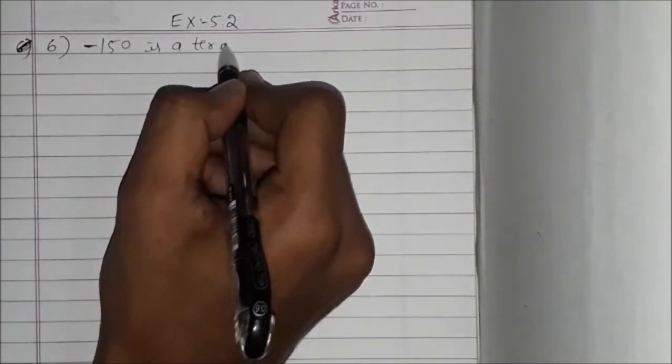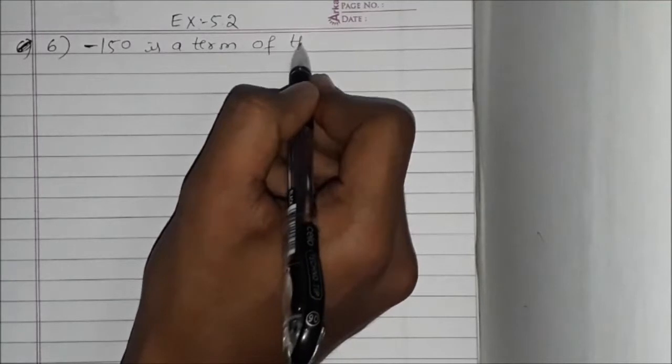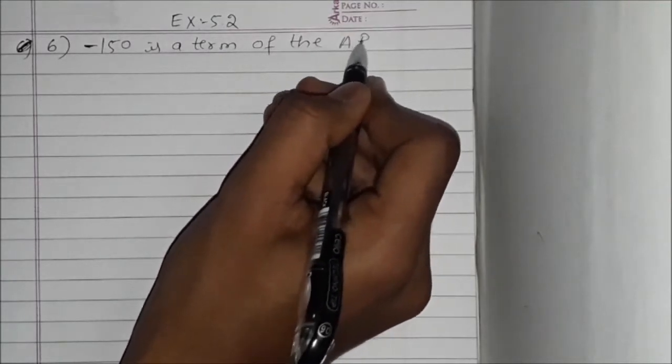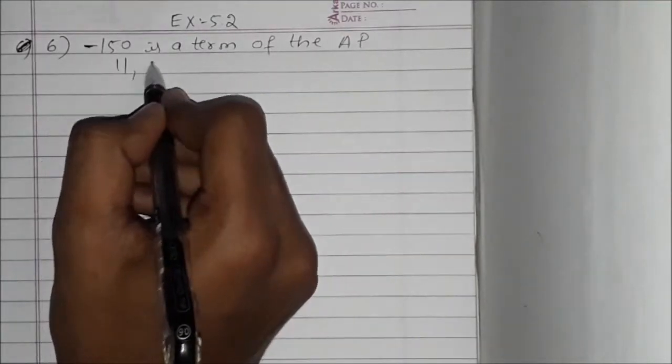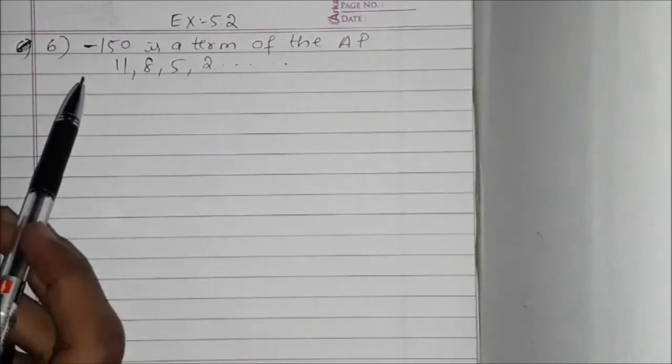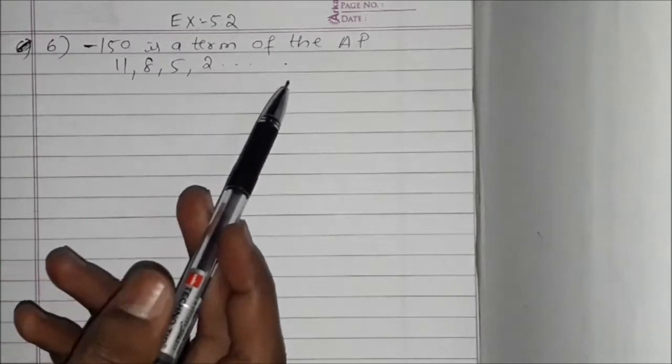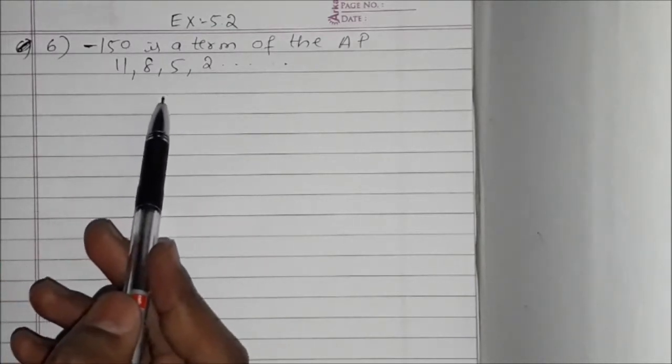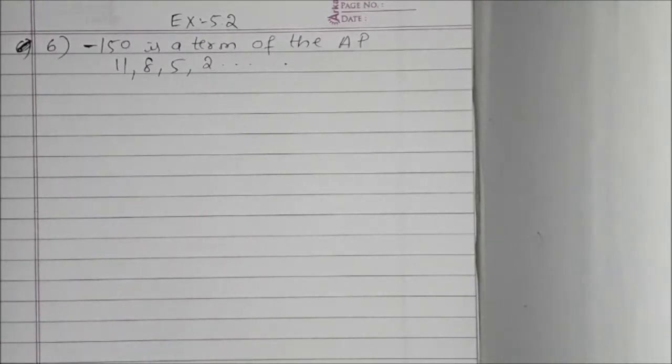Minus 150 is a term of the AP 11, 8, 5, 2. We have to check whether minus 150 is a term of the AP 11, 8, 5, 2 or not.